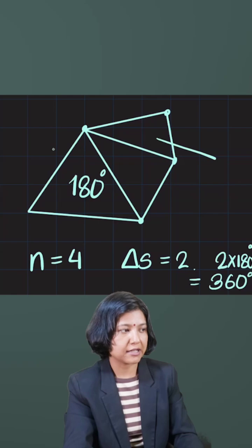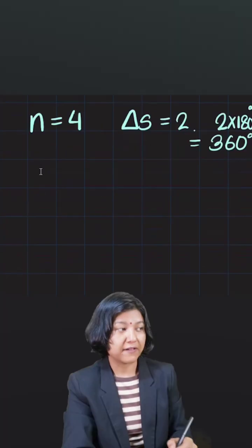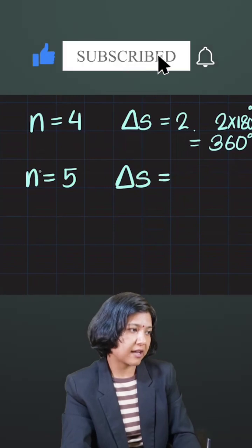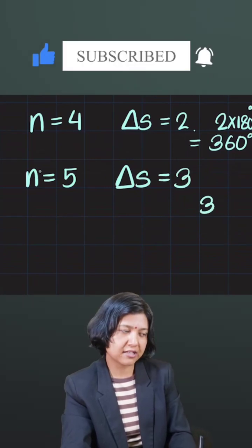I have three triangles now. So if I have three triangles, that is possible when I have five sides. Number of triangles is three, so sum of angles has to be three times 180.